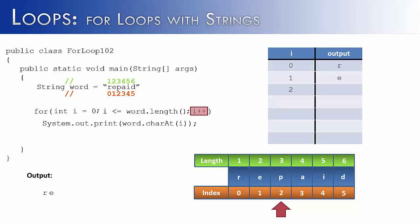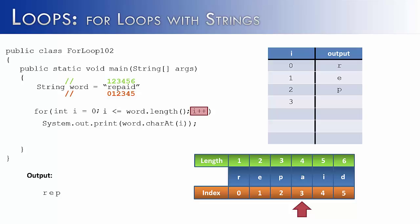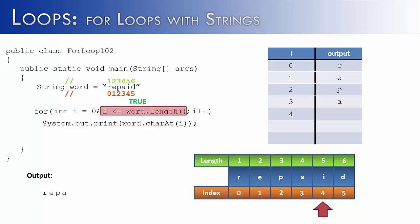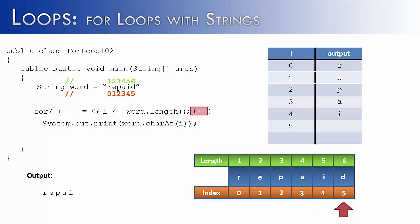Continuing the trace: i becomes 2, condition is true, we print 'p'. Increment to 3, condition true, we print 'a'. Increment to 4, true, 4 is less than 6, we print 'i'. Increment to 5, true, we print 'd'. At this point we've completed the word and iterated through each individual character.